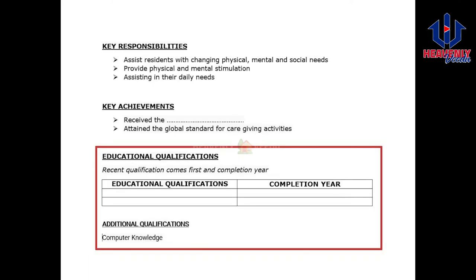The next one is the Education Qualification. The Education Qualification is used in our biodata. We have any recent qualification, when it was completed, the year it was completed, and fill it in. Put it in a table. This is the educational qualification, which includes computer skills, MS Office, and courses. This is the education qualification section.